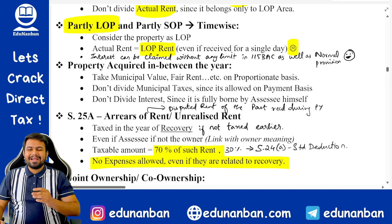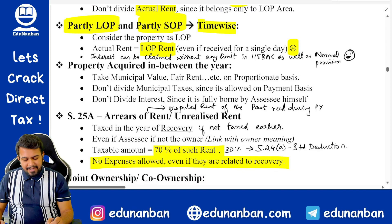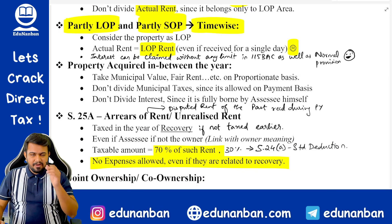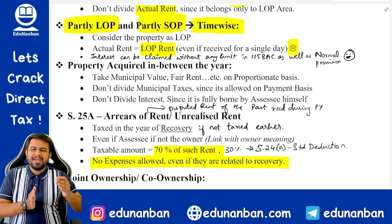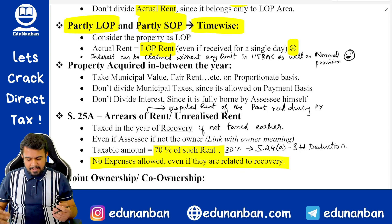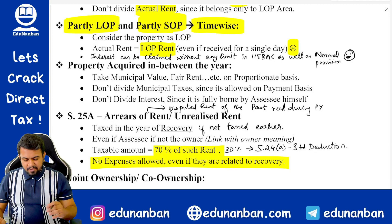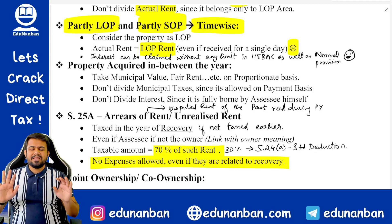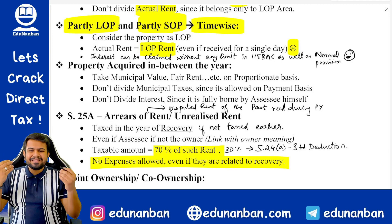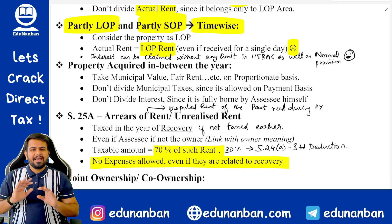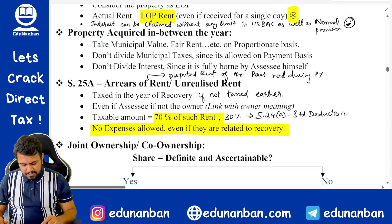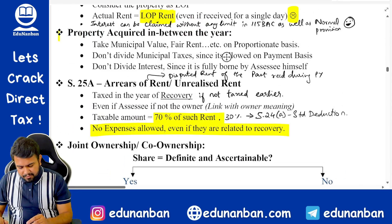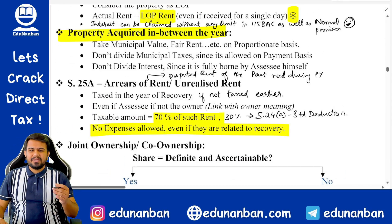If the house property is partly let out and partly self-occupied time-wise — for example, for six months it was self-occupied and remaining six months it was let out — simply treat it as a let out property and solve the question.